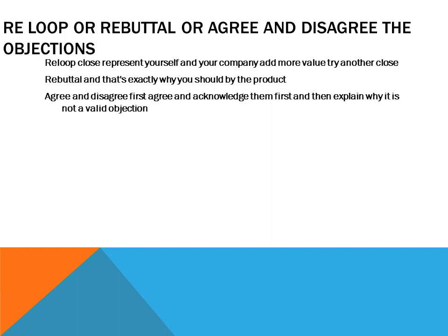If they have any objections, you can try the re-loop, rebuttal, or agree and disagree techniques. A re-loop close is where you re-present yourself and your company, add more value, and try another close. A rebuttal is saying 'that's exactly why you should buy the product' and passing the pen. And my favorite is the agree and disagree — first you agree and acknowledge their objection, then explain why it's not a valid objection and that it should not stop them from buying your product or service.